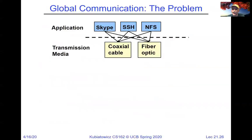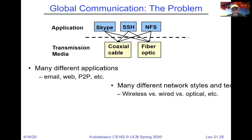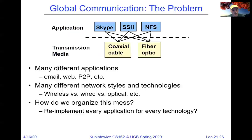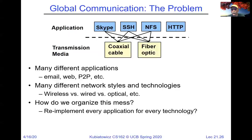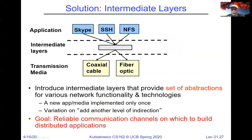In general, there are many possible communication mechanisms and many such things over which to communicate, and many applications — you very rapidly have an N-squared issue, or even N-cubed. The answer is you have many applications and many network styles, and you organize the mess by putting intermediate layers in the system to help us out. These intermediate layers provide a set of abstractions for various network functionality technologies. This narrow waist — which turns out to be IP — is a way to basically get reliable communication channels on which to build distributed applications.